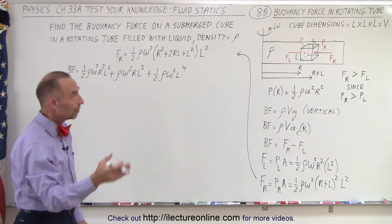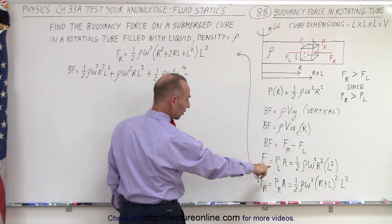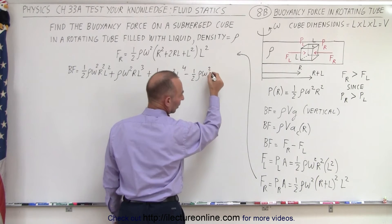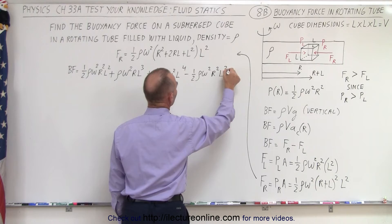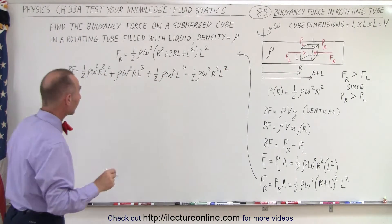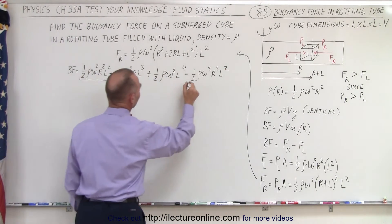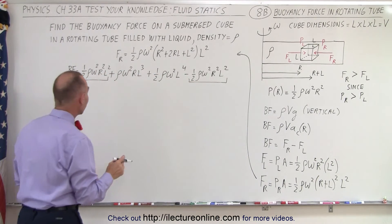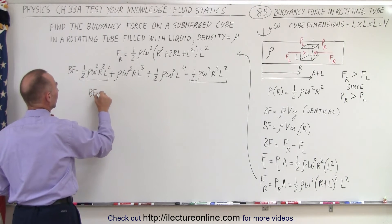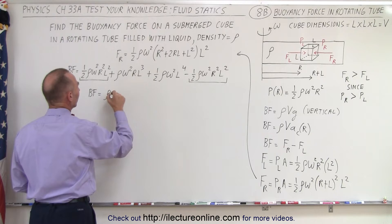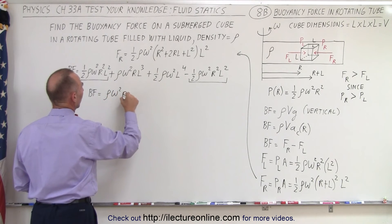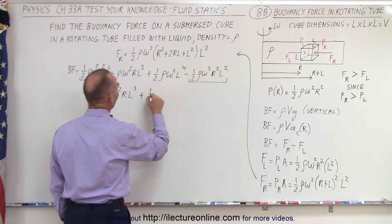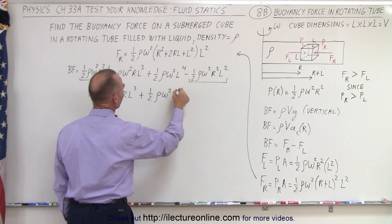Subtracting F_left from F_right to get the buoyancy force: the first term ½ρω²r²L² and the subtracted term −½ρω²r²L² cancel out, leaving: F_buoyancy = ρω²rL³ + ½ρω²L⁴.